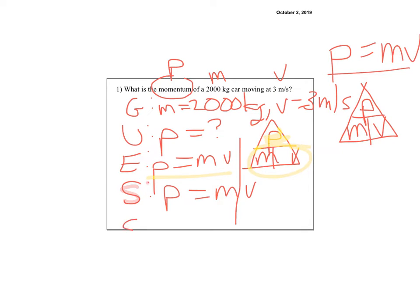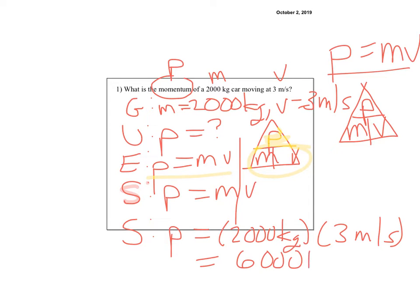And then the solution would be P is equal to 2,000 kilograms times 3 meters per second. I'm going to need a calculator for that one. So that's 6,000, and the weird units for momentum, kilograms meters, you just kind of squish them all together. It doesn't make anything. It's not a Newton, because a Newton, remember, is a kilogram meter per second squared, so it's missing a second squared. So it's just 6,000 kilogram meters per second.